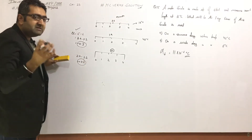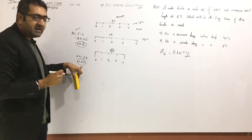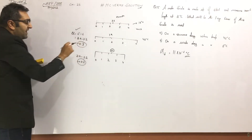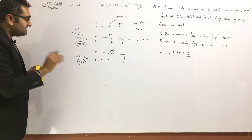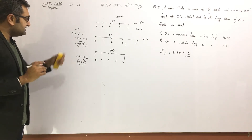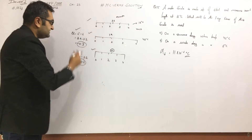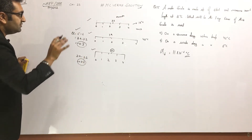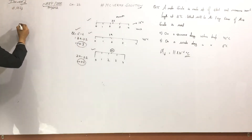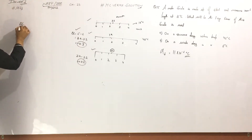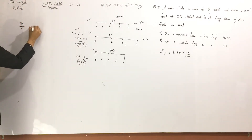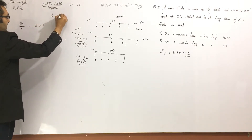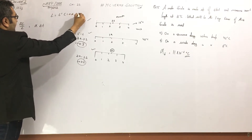So, when the scale is contracted, the error is positive, and when the scale is expanded, the error is negative. This should be clear. The formula is: 1 plus alpha delta T.